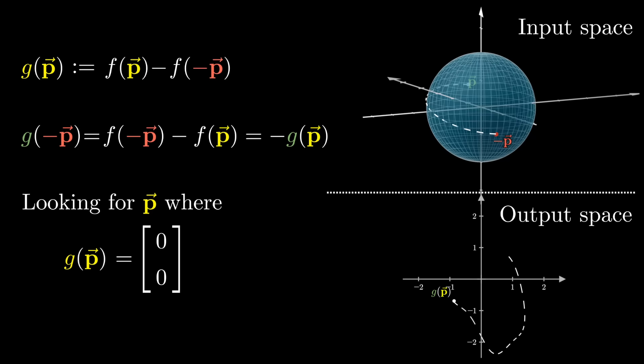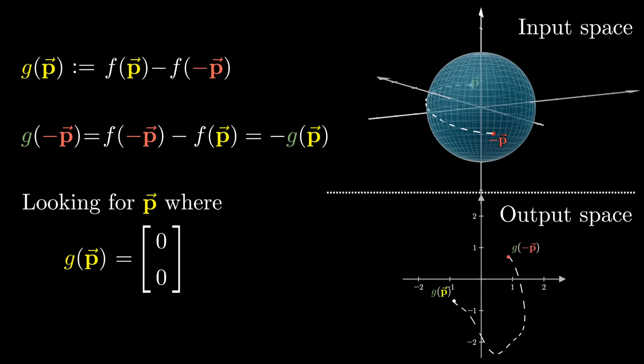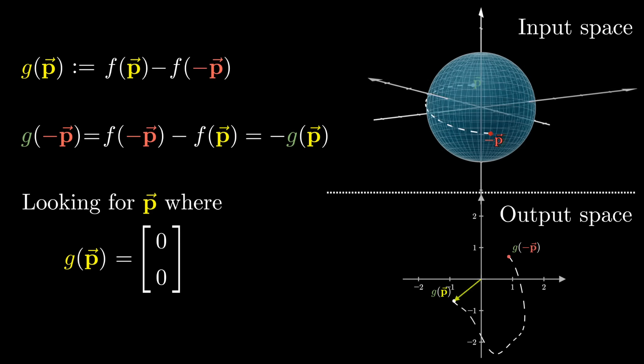In other words, going to the antipodal point of the sphere results in reflecting the output of g through the origin of the output space. Or maybe you think of it as rotating that output 180 degrees around the origin.